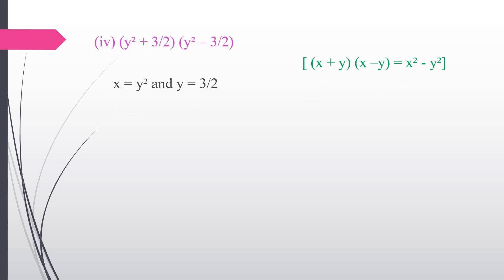Fourth subdivision: (y² + 3/2)(y² − 3/2). Here we use the identity (x + y)(x − y) = x² − y². In place of x we take y², and in place of y we take 3/2. Applying the identity: (y²)² − (3/2)² = y⁴ − 9/4. So the answer is y⁴ − 9/4.